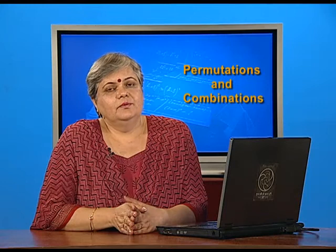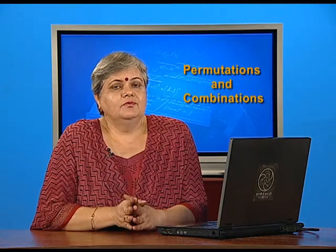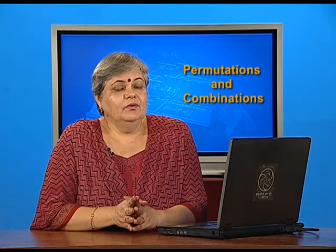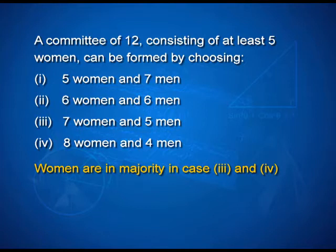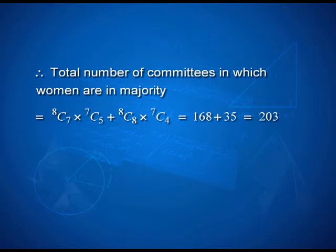In the second part, the women have to be in majority. Looking at women in majority, the possible cases are 7 women and 5 men, or 8 women and 4 men. Therefore, the total number of ways such a committee can be formed is 8C7 into 7C5, plus 8C8 into 7C4, giving rise to 203.